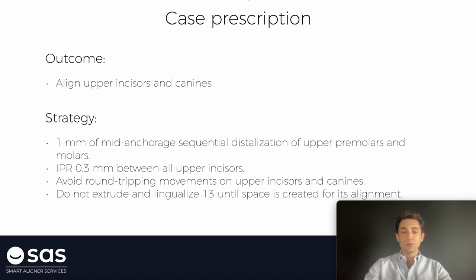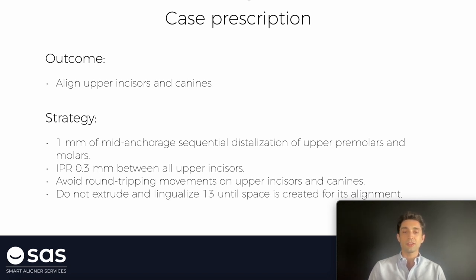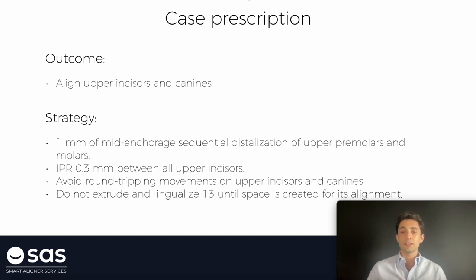The strategy is going to be this one: first, distalize 1 mm on each quadrant with sequential distalization. Then perform 0.3 mm of IPR between all upper incisors. In that way, I create enough space to reduce upper anterior proclination. I also ask to avoid round-tripping movements on upper teeth, because they are very common to see when we have these severe crowding problems. I want to avoid them in order to not procline more the tooth 13. And I don't want to extrude and lingualize — I don't want to move 13 until enough space is created for its alignment.